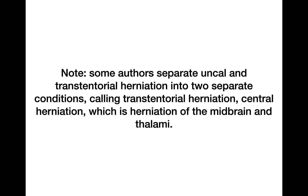Some authors separate uncal and trans-tentorial herniation as two distinct conditions. Robbins lists them together, but trans-tentorial herniation — also called central herniation — refers to herniation of the midbrain and thalamus rather than the uncus. The uncus herniates through the tentorium, which is why they are often grouped together.